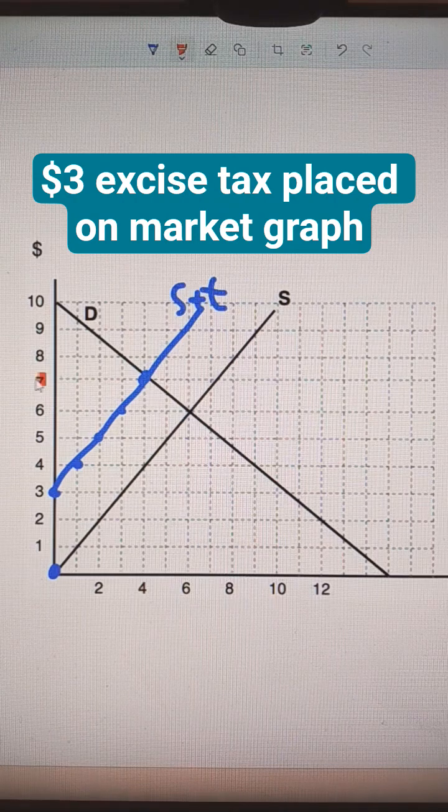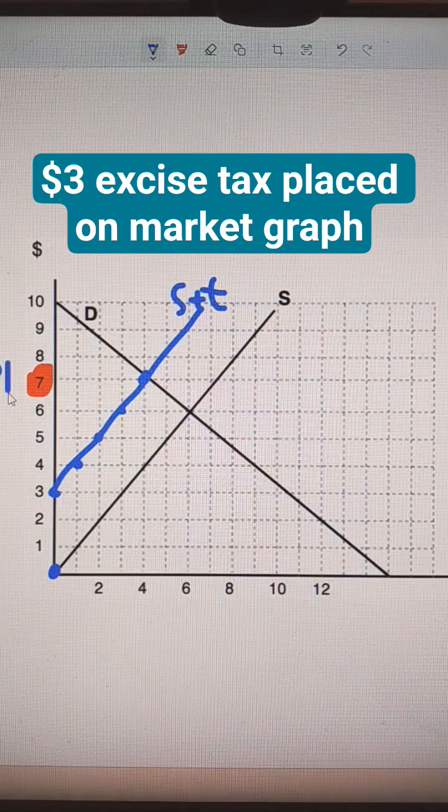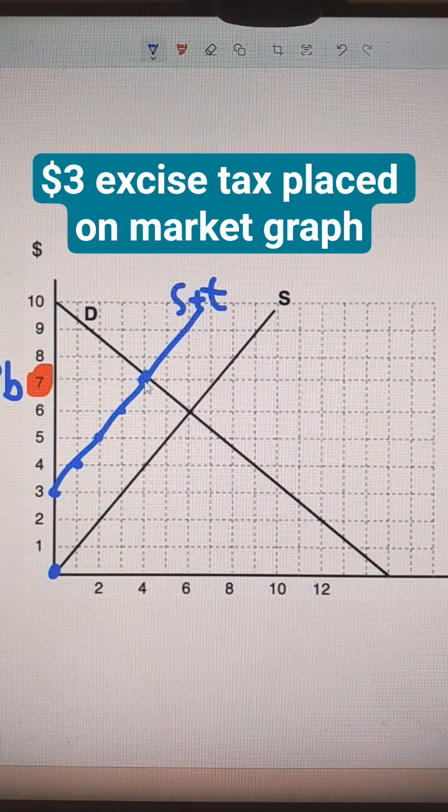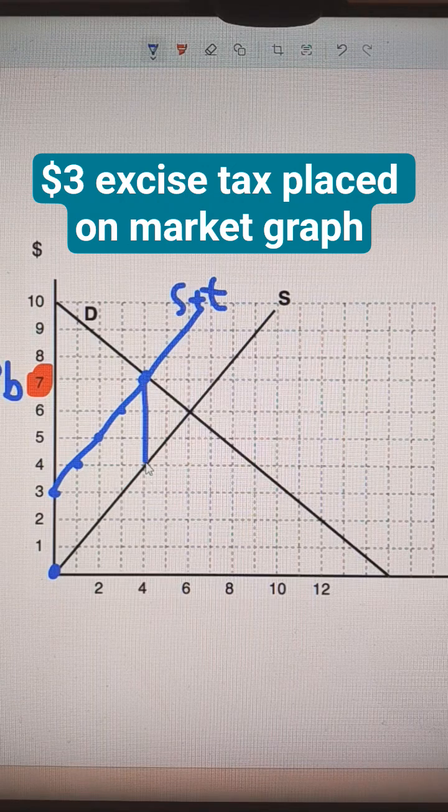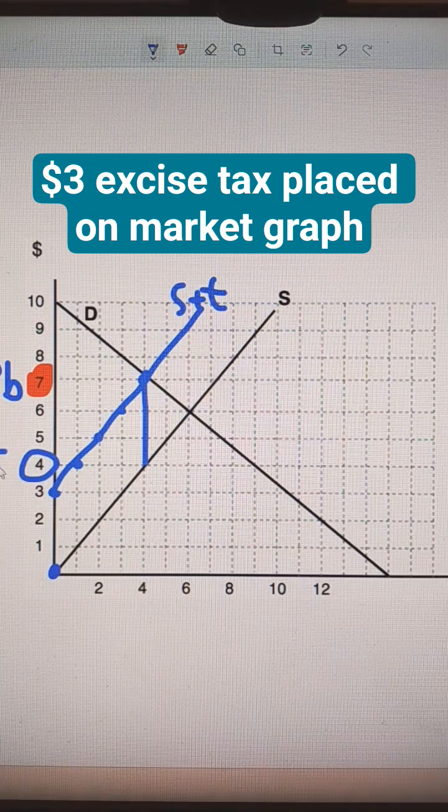The price that the buyers pay will be $7. So you could call that PB. And then the sellers don't get to keep $7. They only get to keep $4 because three of it has to go to the government. So this would be PS.